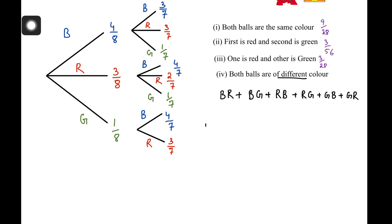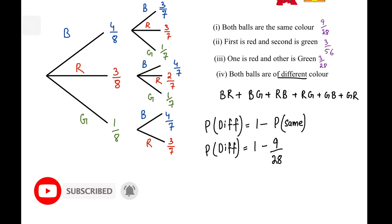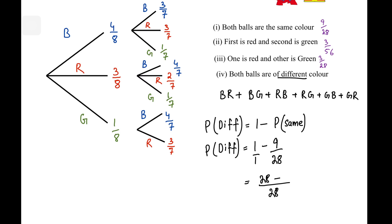So the probability of different color equals 1 minus the probability of same color. To find the probability that the two balls are of different color, I take 1 and subtract the probability that both balls are the same color, which is 9 over 28. Using LCM — the LCM is 28 — that gives us 28 minus 9, which is 17. So 17 over 28 is the answer.